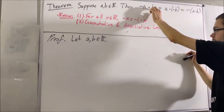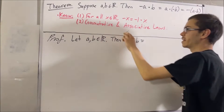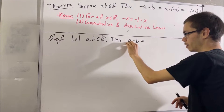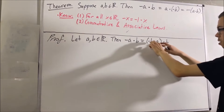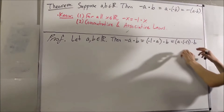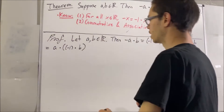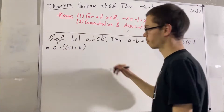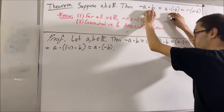Let me start out by writing the negative of A times B. We know from fact number one that the negative of A is equal to negative 1 times A, so we can replace the negative of A with negative 1 times A. Now, using the commutative law, we're going to swap the negative 1 and A around. And then we can use the associative law to move the outermost parentheses around the negative 1 and the B. We know from fact number one that negative 1 times B is equal to the negative of B. So through this chain of equalities, we have shown that these two are equal.